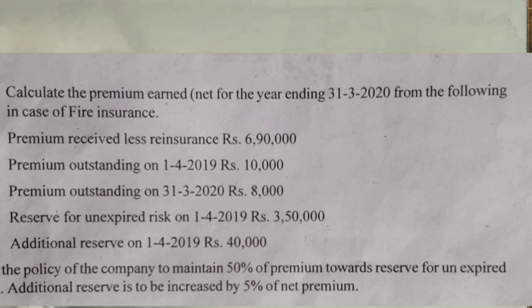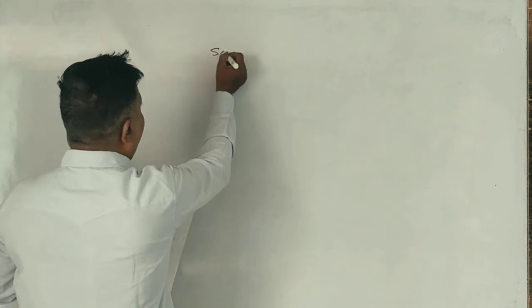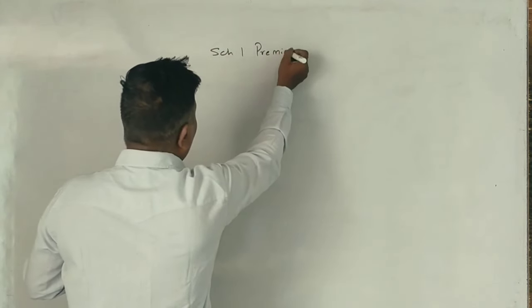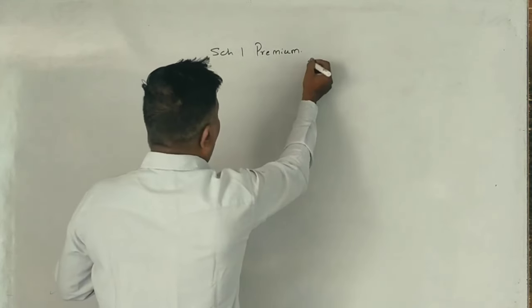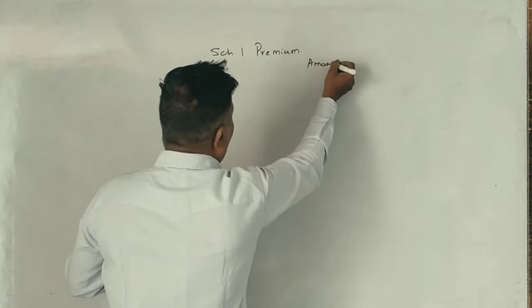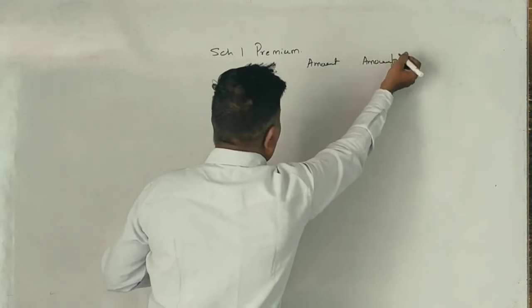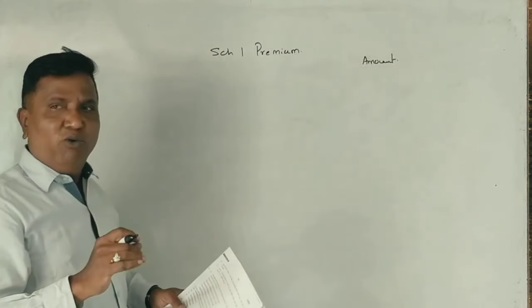This is why most people ask questions. Usually, for a general insurance company, the premium should be prepared as number one — the premium.